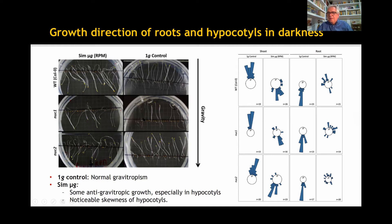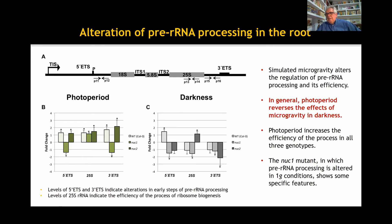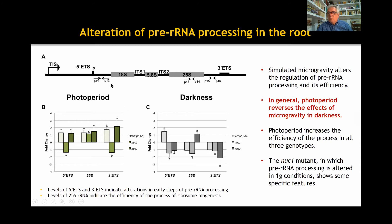This skewness of hypocotyls was restricted to the conditions of microgravity and darkness and did not appear in any other condition. The activity of ribosome biogenesis is an accurate estimation of the rate of cell growth, since it is directly correlated with the synthesis of proteins. A decisive step in ribosome biogenesis is the processing of the primary transcript of ribosomal genes, the 45S pre-rRNA. The efficiency of this processing was analyzed by RNA quantification at both ends of the transcript — the 5' ETS and the 3' ETS — and by quantification of 25S rRNA by RT-qPCR.